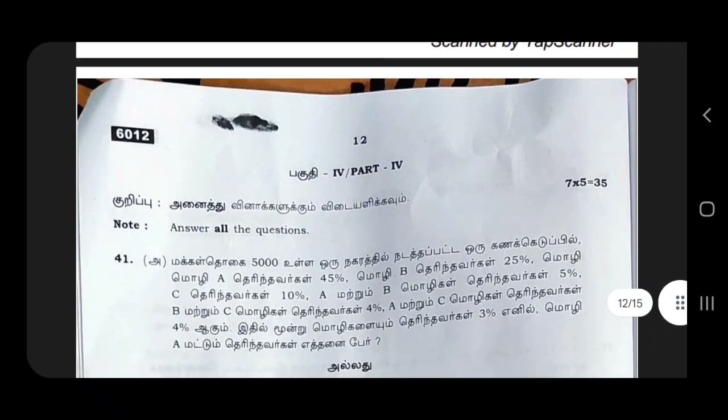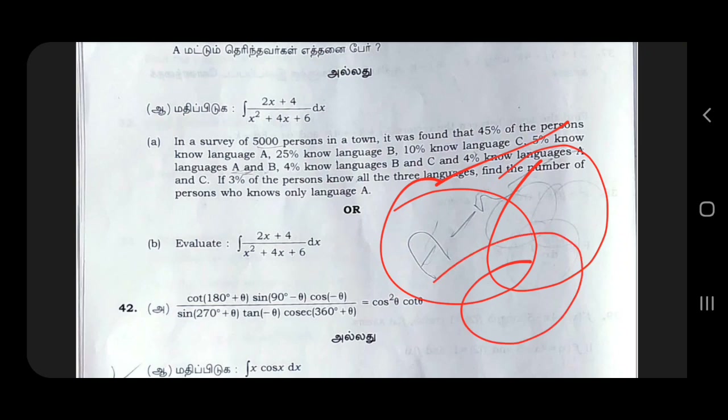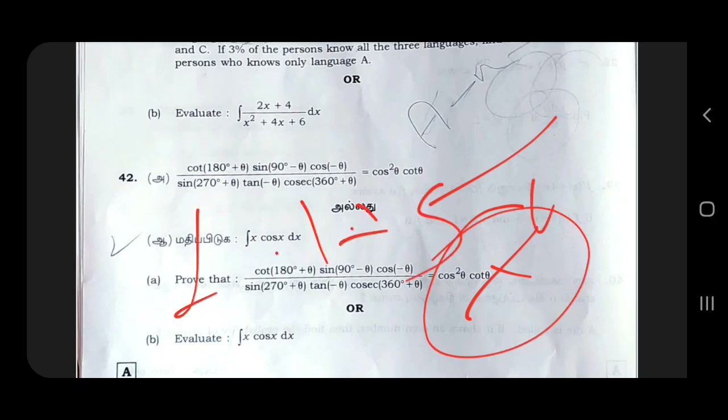Now we have a sum from the first page: A union B union C. We have LHS and RHS, and LHS equals RHS. I will add 2 marks.